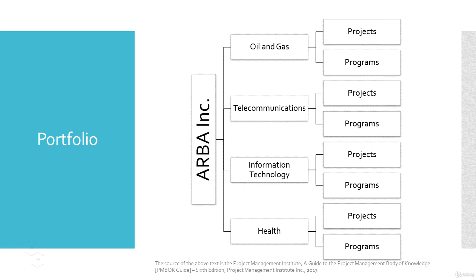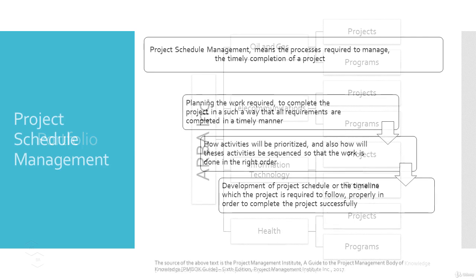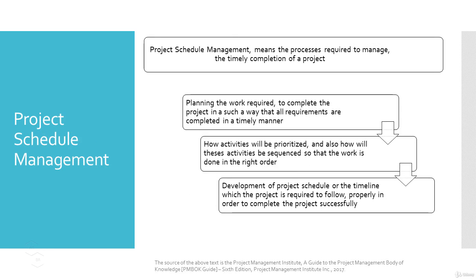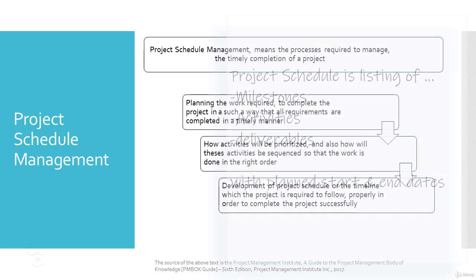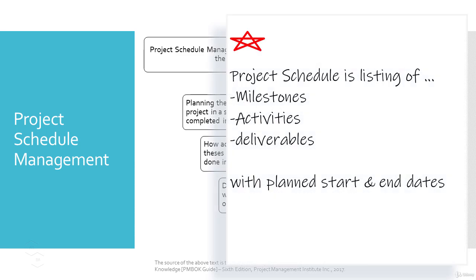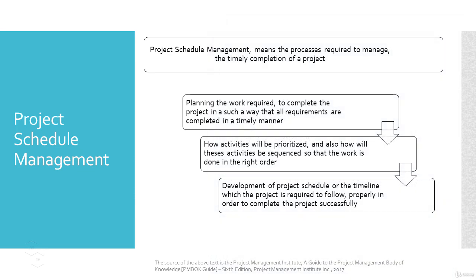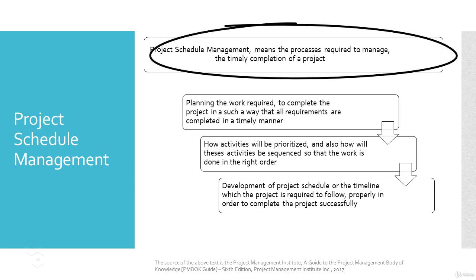Next we are going to learn another very important and core concept called schedule management. A project schedule is a listing of milestones, activities, and deliverables of a project, typically with planned start and finish dates. As mentioned in the PMI PMBOK 6th edition, the project schedule management includes the processes required to manage the timely completion of the project. As a project manager, it's your responsibility to have proper schedule management planning and control in place to deliver all the project scope on time.